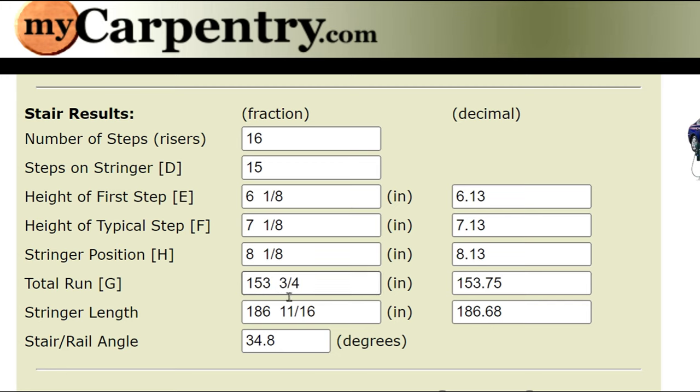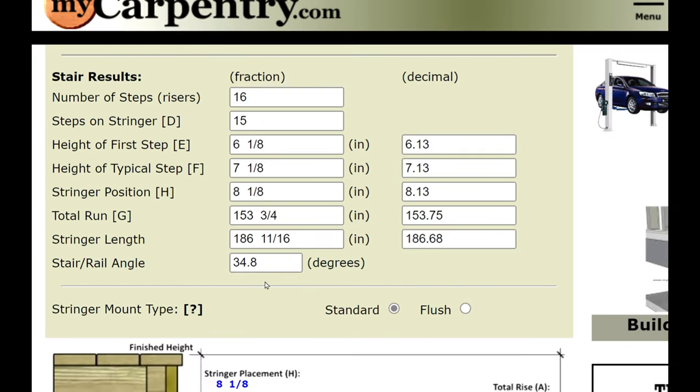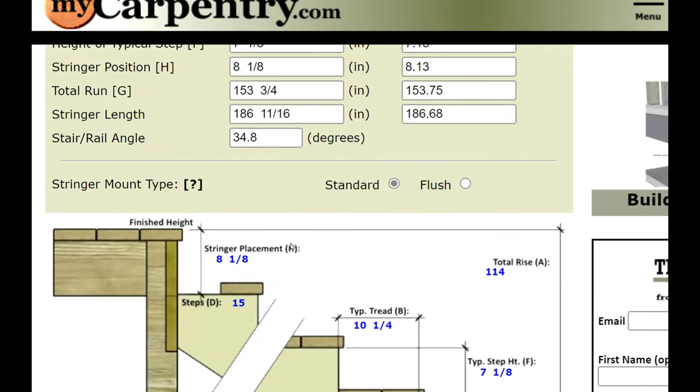The total run is going to be 153.75 and the stringer length is going to be 186. Our stair rail angle is going to be 34.8. And this is the visual result of that calculation.